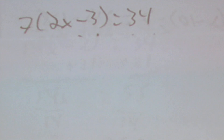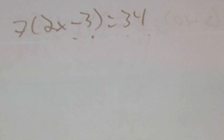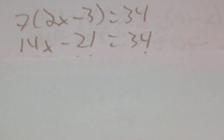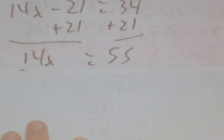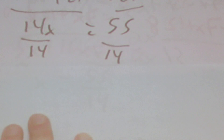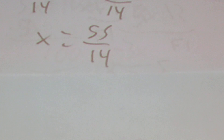Then another distribution problem: 7(2x − 3) = 34. Multiply the 7 through to get 14x − 21 = 34. Add 21 to both sides to get 14x = 55. Divide both sides by 14 to get x = 55/14. There's nothing to simplify here. That's what we'll do for part one — come back for part two.